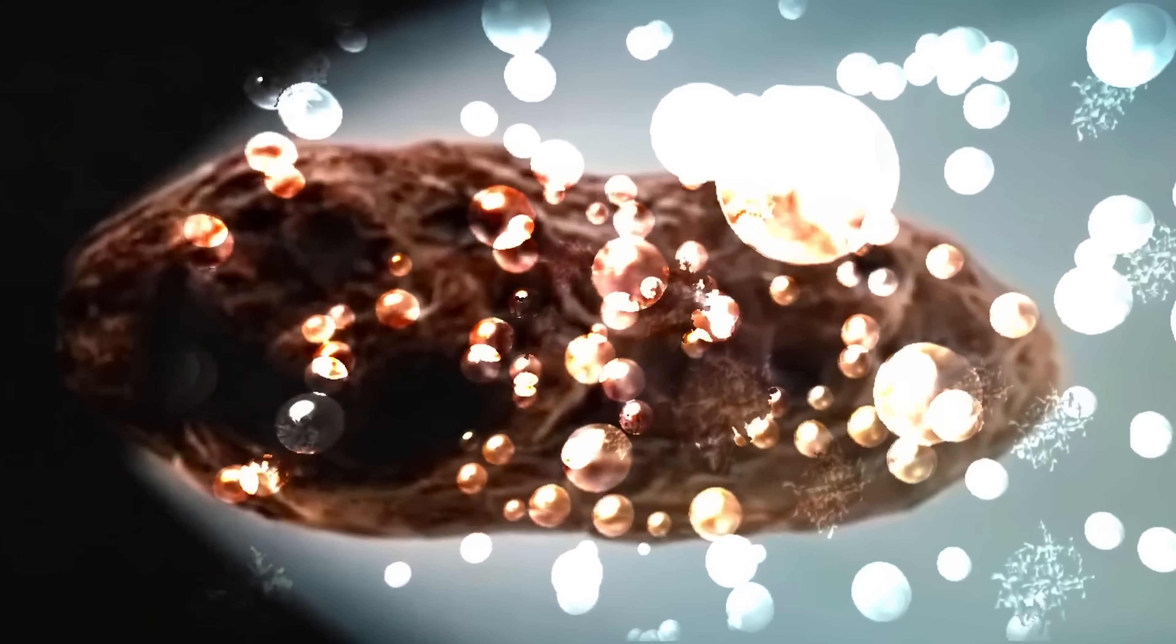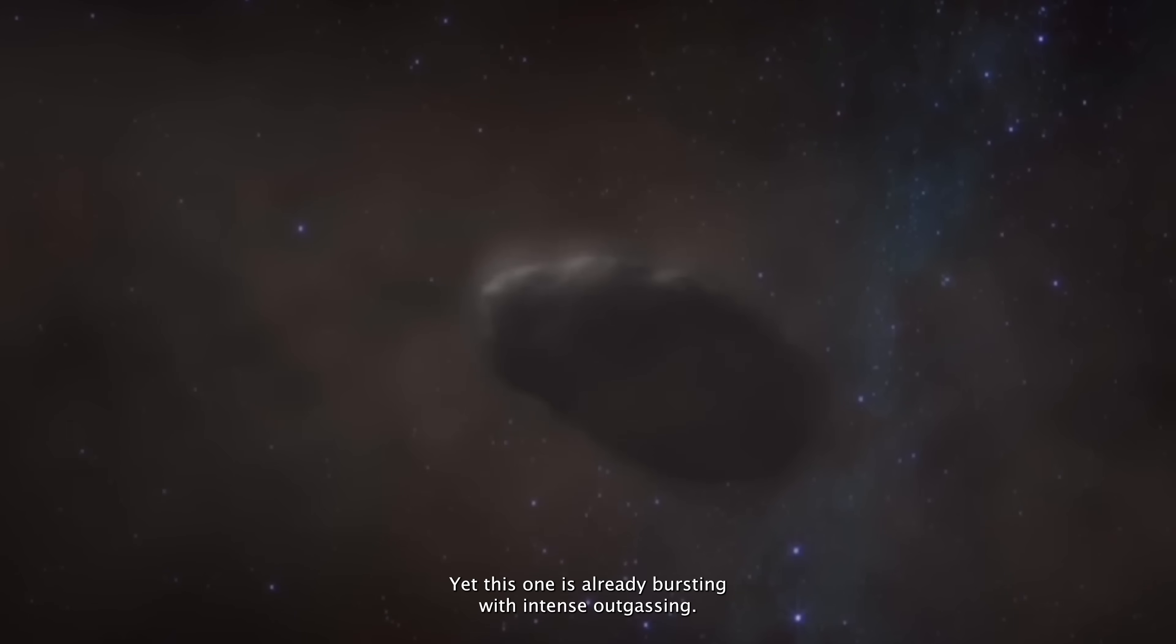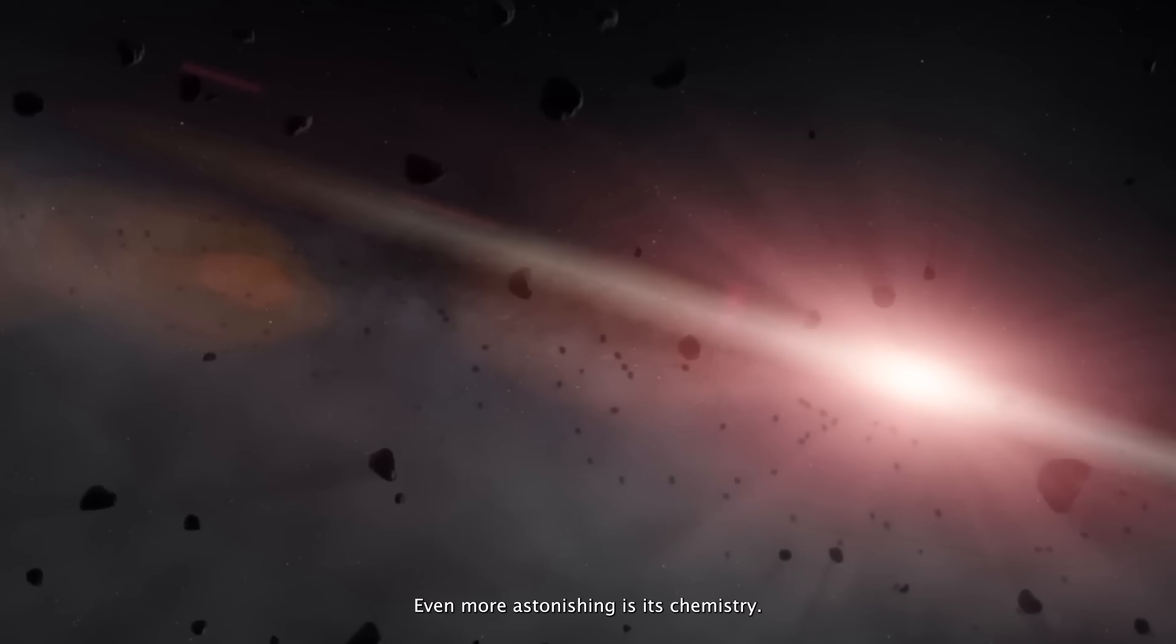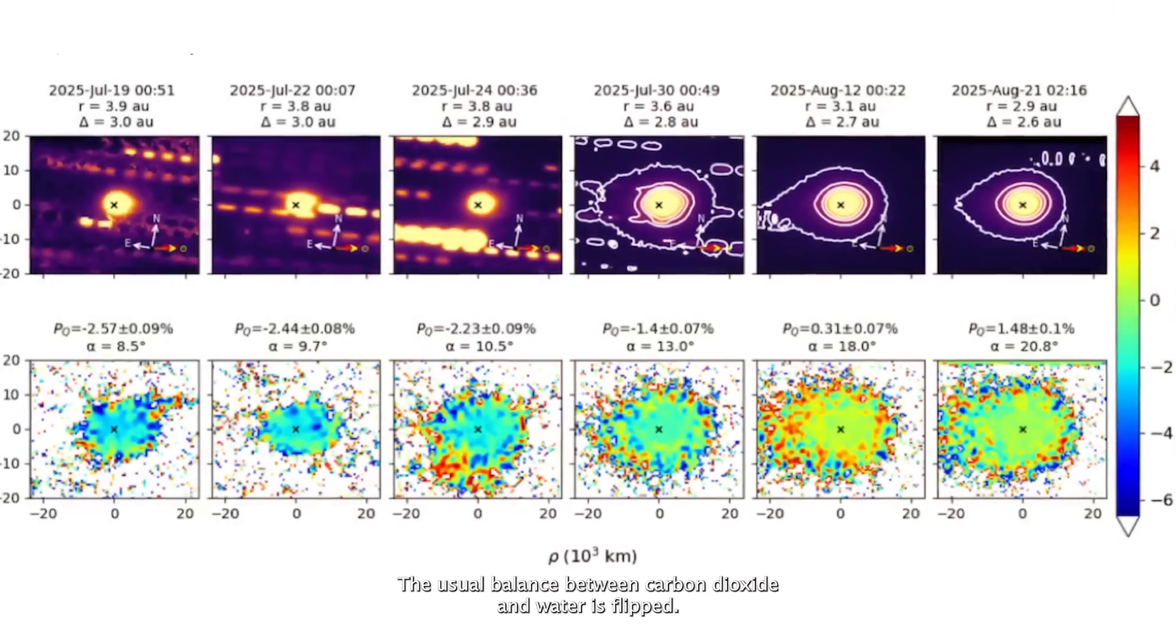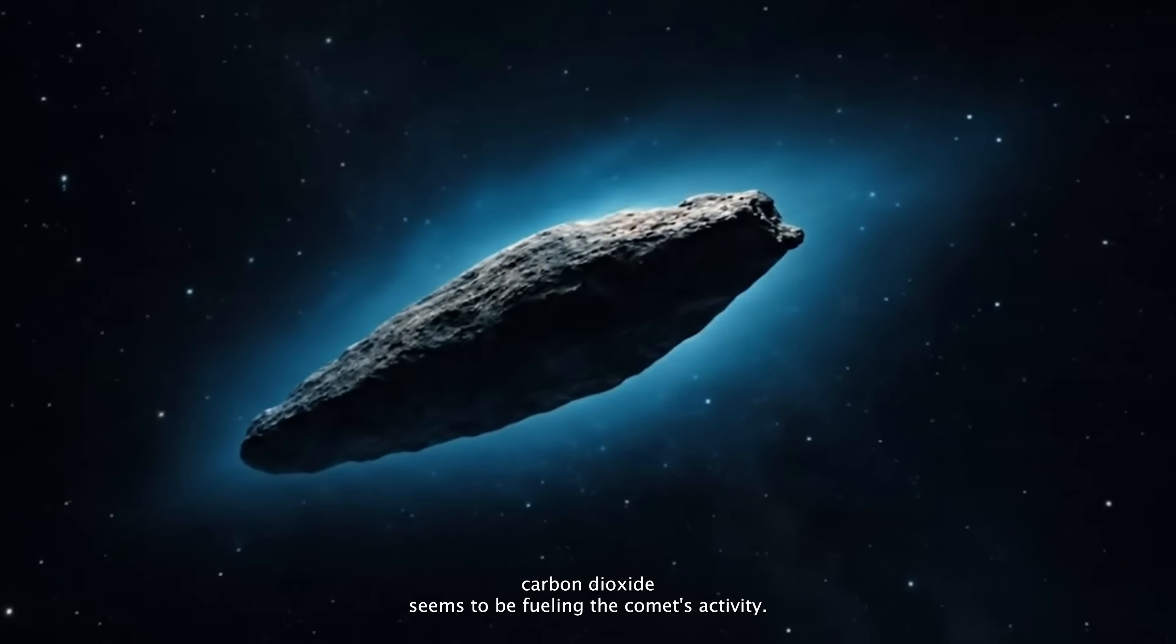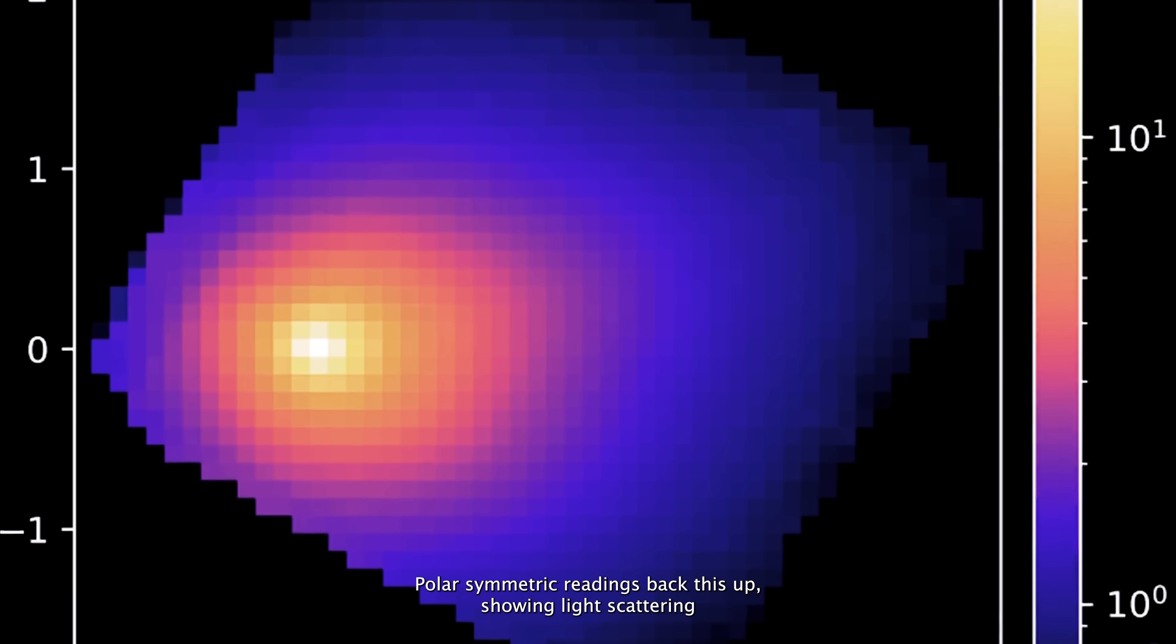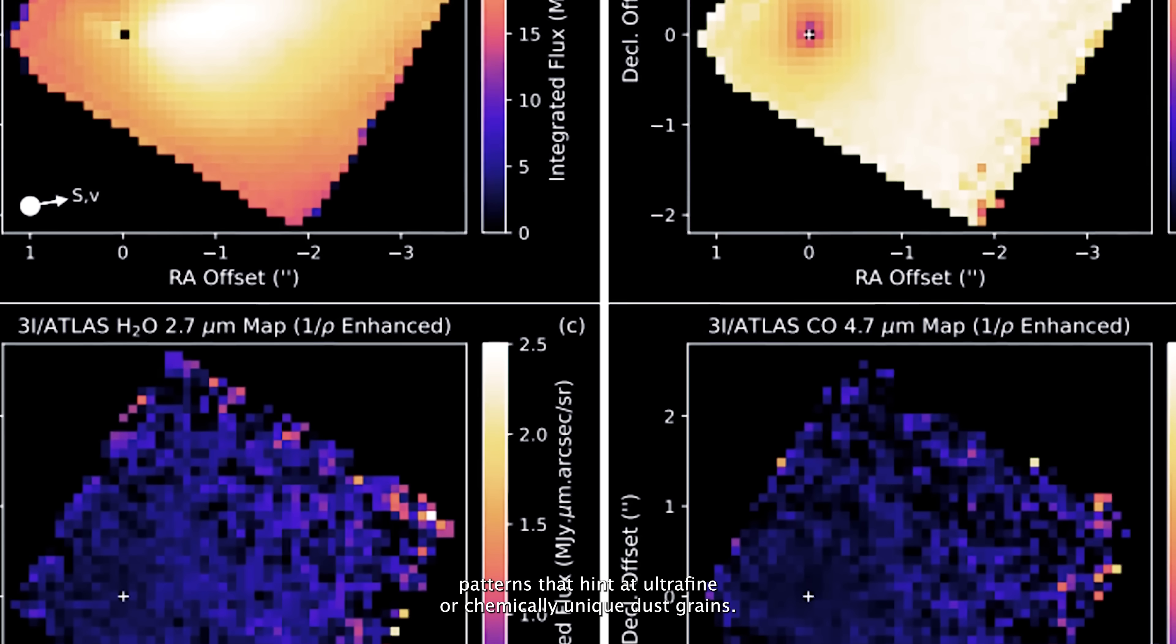What scientists are seeing from 3i Atlas is anything but ordinary. Most comets stay quiet this far from the Sun, yet this one is already bursting with intense outgassing. Even more astonishing is its chemistry. The usual balance between carbon dioxide and water is flipped. Instead of water leading the charge, carbon dioxide seems to be fueling the comet's activity. Polarimetric readings back this up, showing light scattering patterns that hint at ultrafine or chemically unique dust grains.